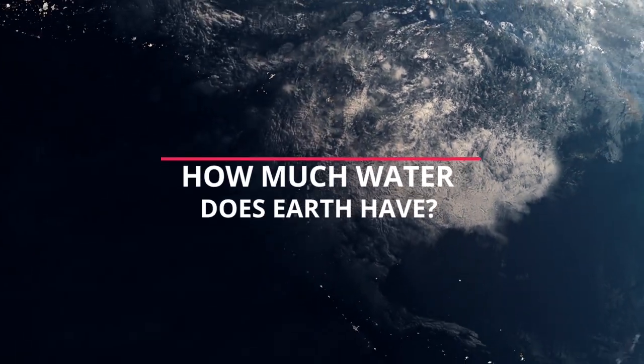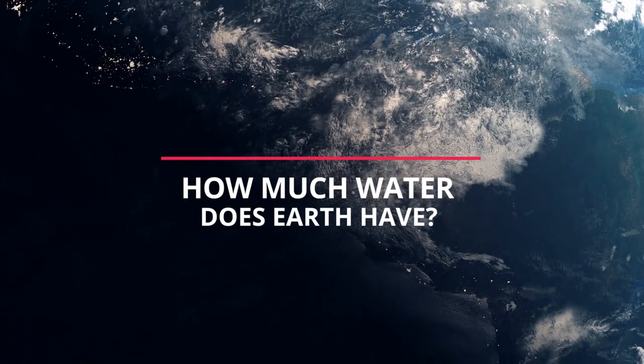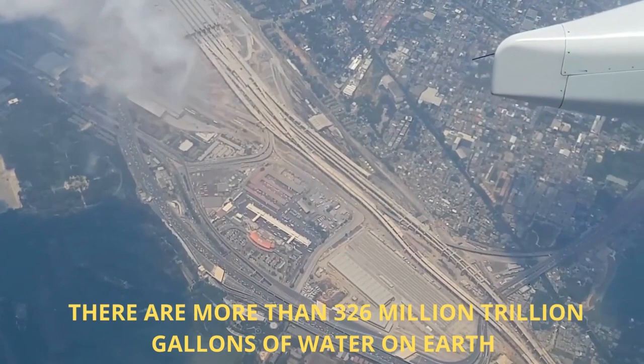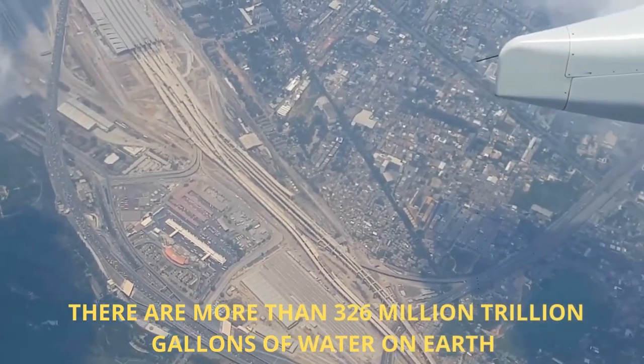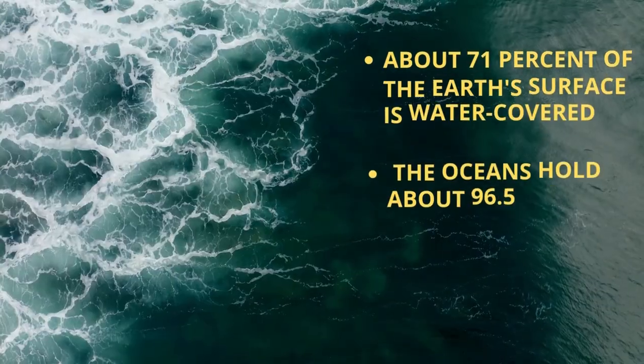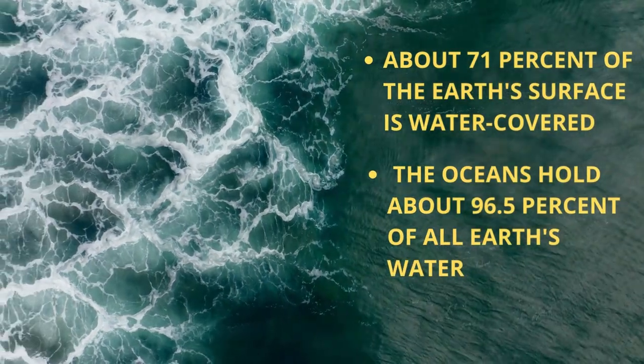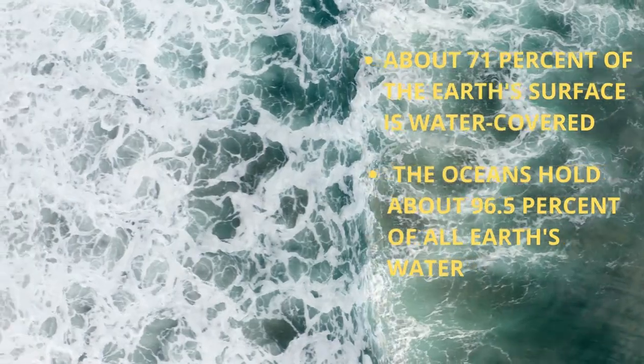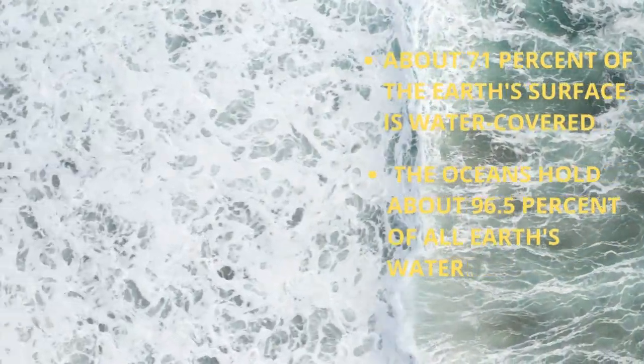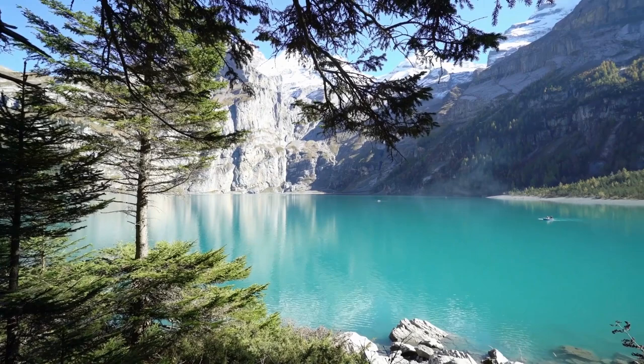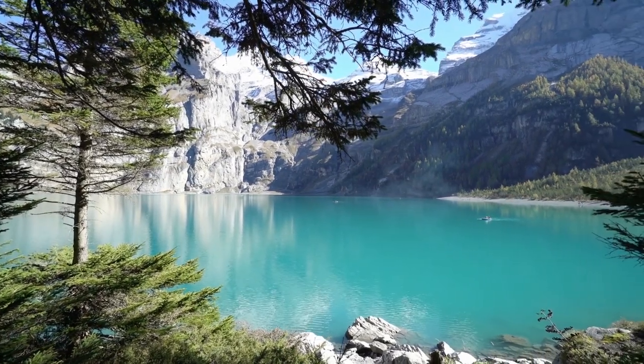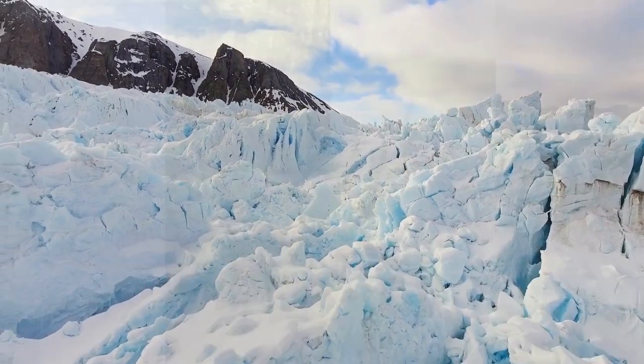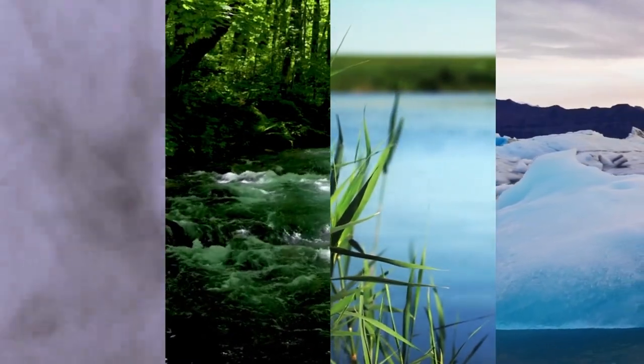How much water does Earth have? The Earth is a watery place. There are more than 326 million trillion gallons of water on Earth. About 71 percent of the Earth's surface is water covered, and the oceans hold about 96.5 percent of all Earth's water. Less than three percent of all this water is fresh water, and of that amount, more than two-thirds is locked up in ice caps and glaciers. Water also exists in the air as water vapor, in rivers and lakes, in ice caps and glaciers, in the ground as soil moisture, and in aquifers.